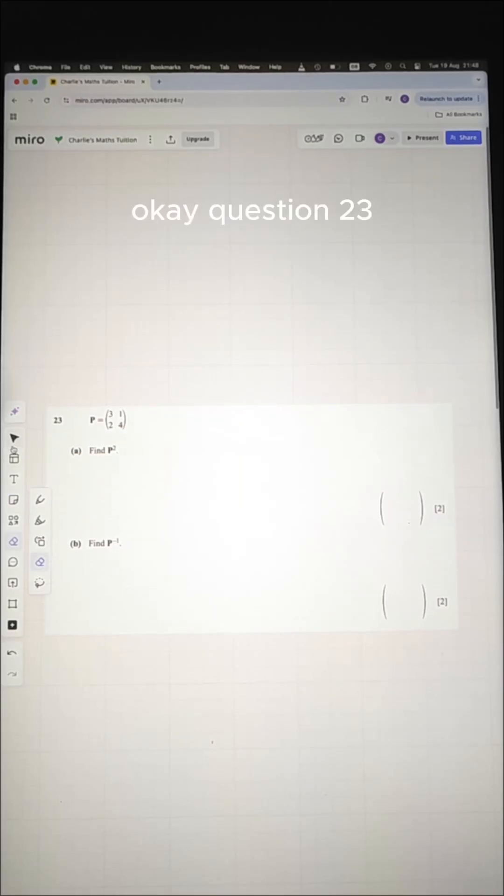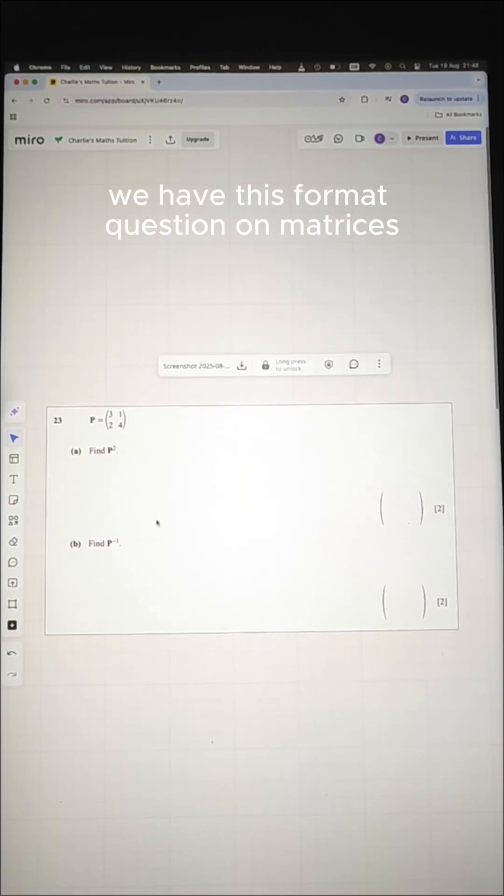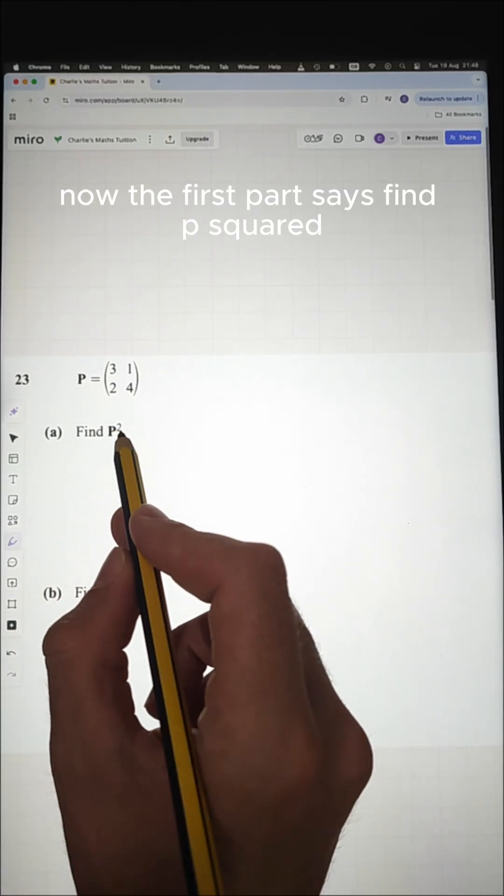Okay, question 23. We have this format question on matrices. Now the first part says find p squared.